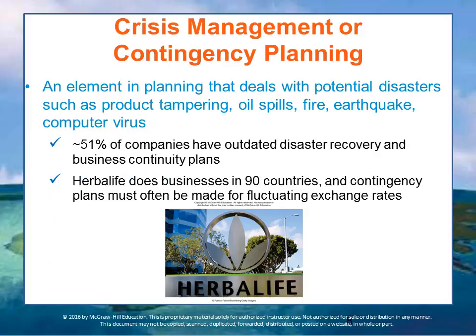One must always remember that contingency plans and crisis management plans are also necessary. Another element of planning is being prepared for unexpected, or perhaps low-probability but always possible, events. This is crisis management and contingency planning, which deals with potential disasters such as product tampering, oil spills, fire, earthquake, or even unethical or illegal conduct by one or more employees.